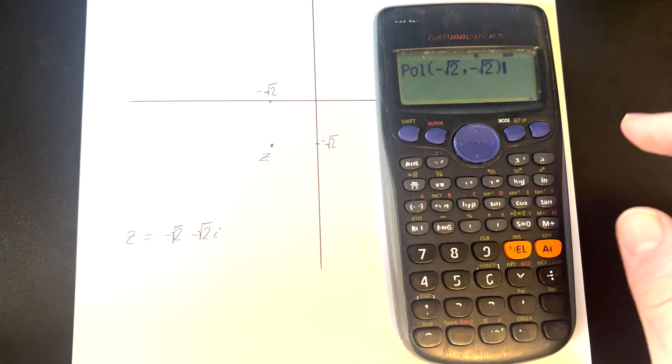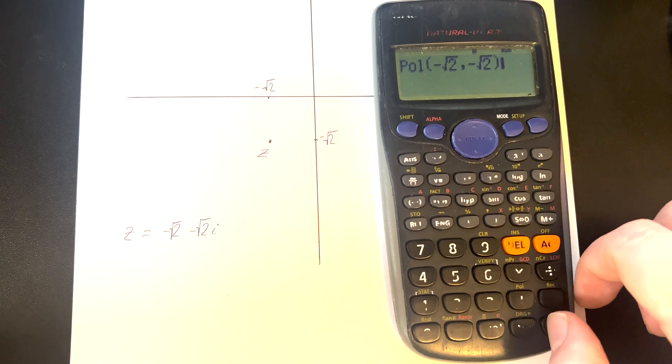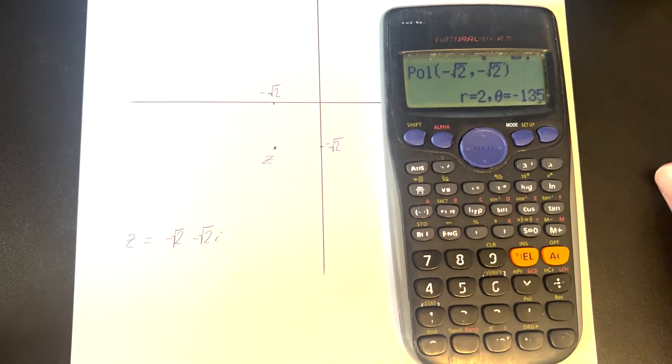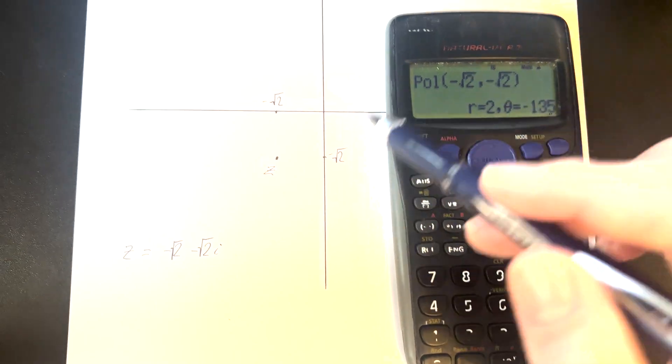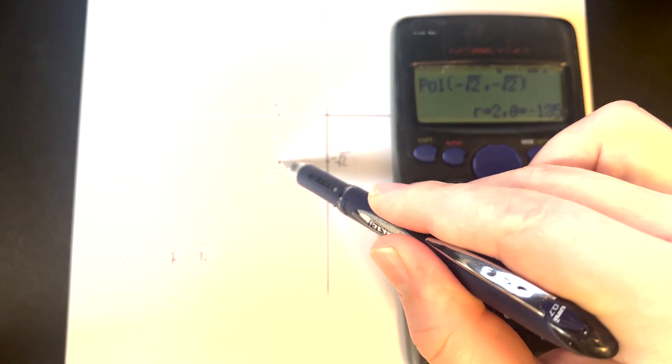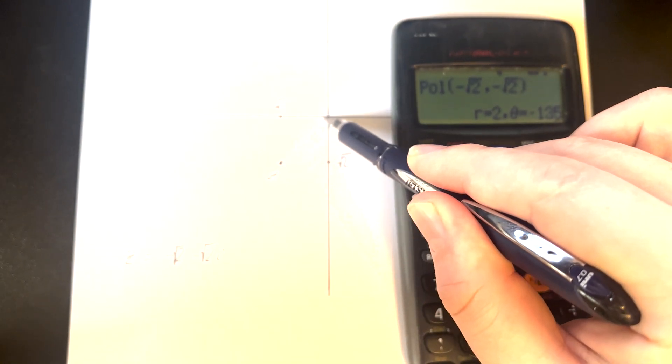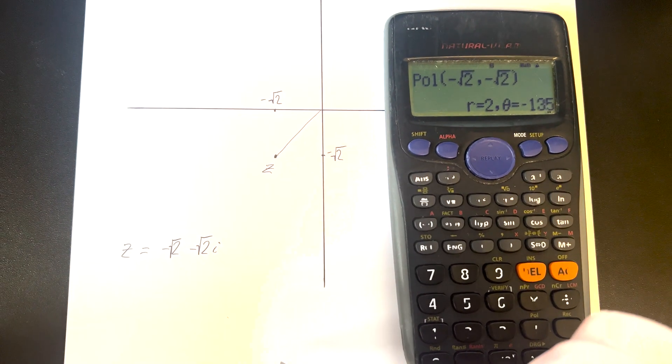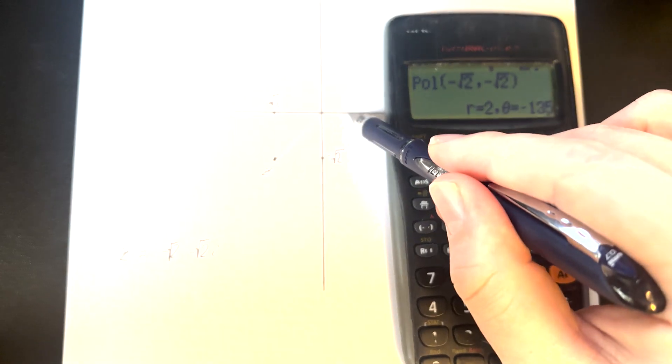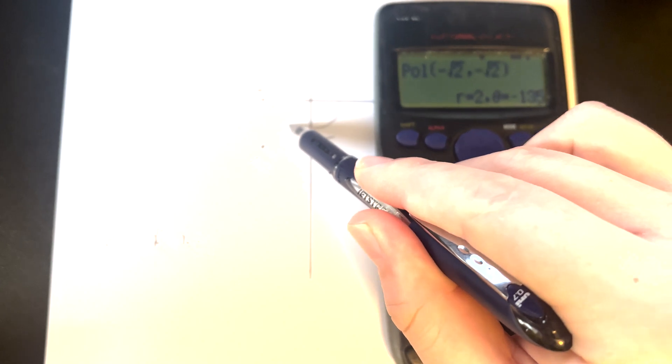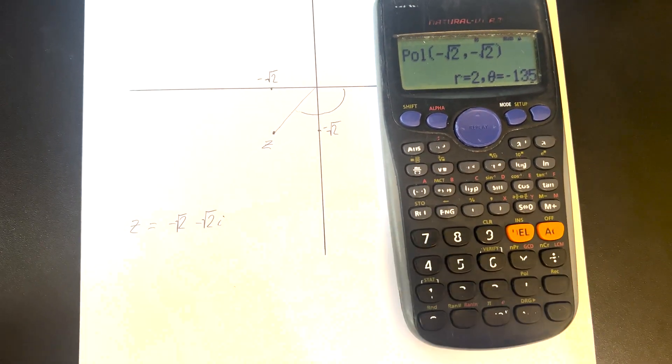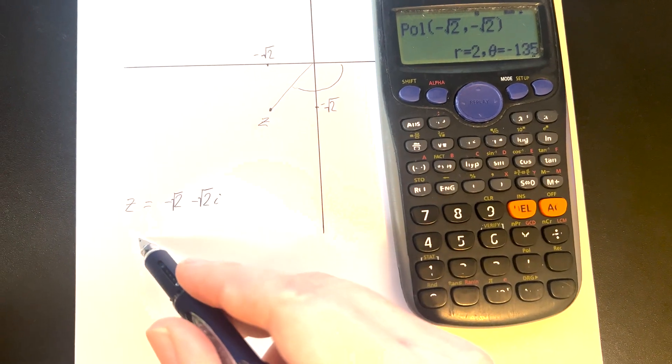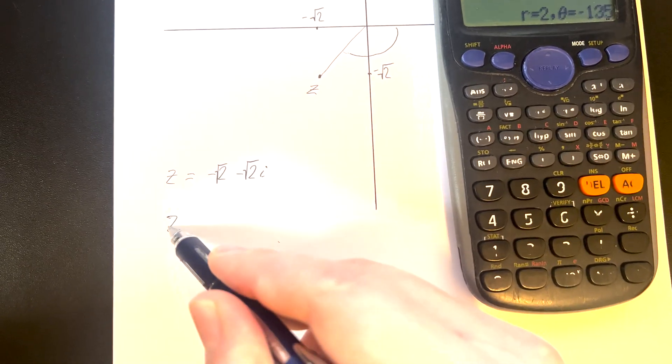Making sure we close off those parentheses, and now we press equals. What that gives us is the modulus and the argument. In other words, the distance from that point z to the origin is 2, and the angle is 135 degrees. Now let's write this in polar form.